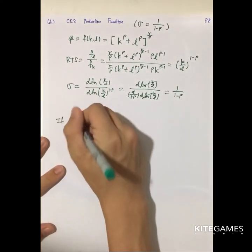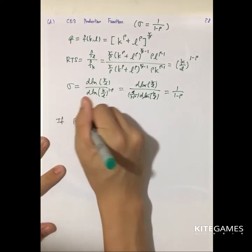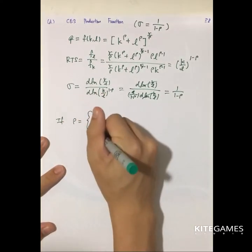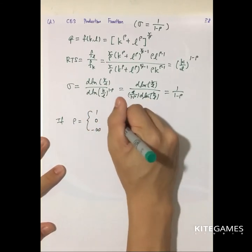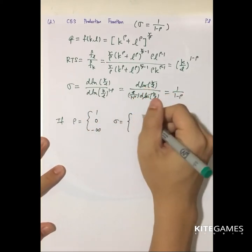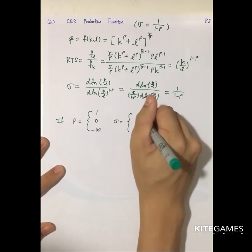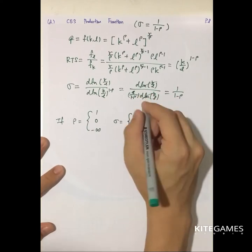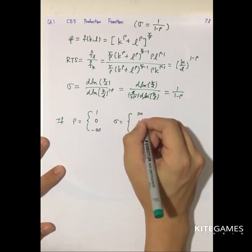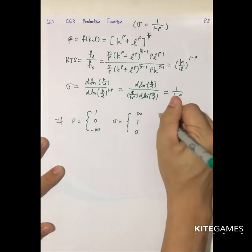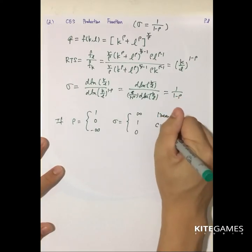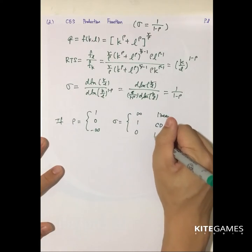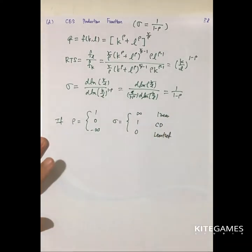If ρ = 1, 0, and negative infinity, then the elasticity of substitution equals infinity, 1, and 0 respectively. So ρ = 1 corresponds to the linear case, ρ = 0 corresponds to Cobb-Douglas, and ρ → −∞ corresponds to Leontief fixed proportions.